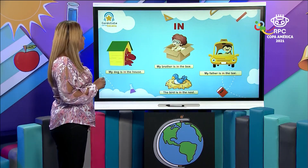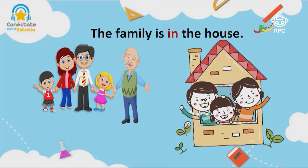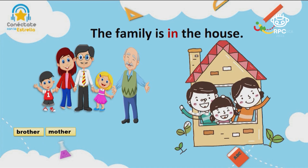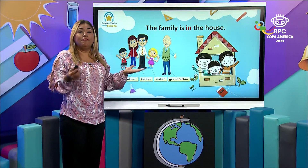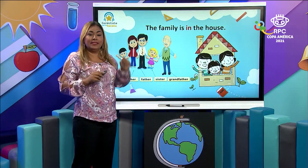Thank you so much for your help. The family is in the house. This is the family. Where is the family? This is the house and the family is in the house. So let's review the members of the family: we have the brother, mother, father, sister. This is the grandfather. So: brother, mother, father, sister, grandfather. How do you call them together? Family. And where is the family? The family is in the house.